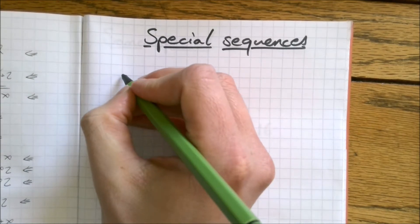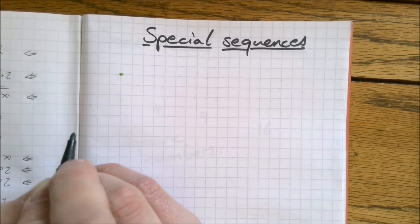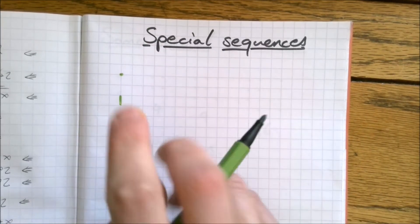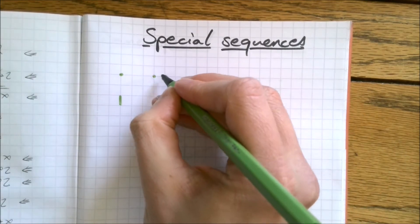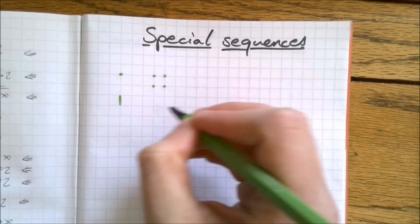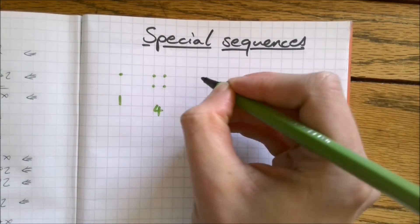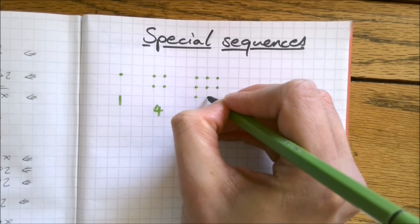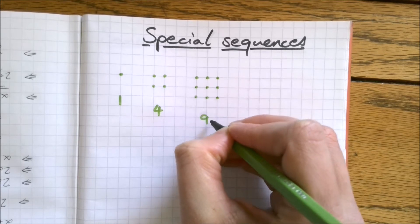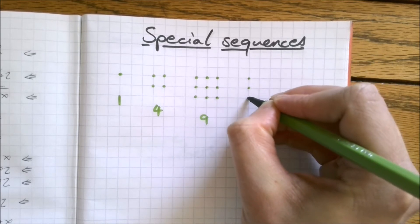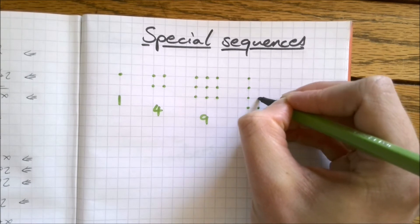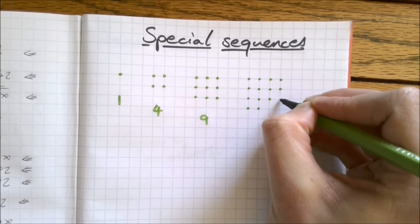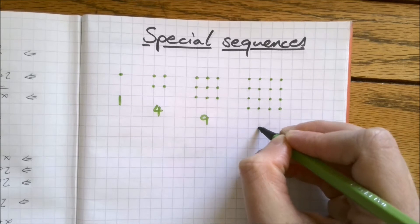The first one I hope will be quite familiar to you. I'm going to draw at the same time. So the first number is one, one dot. The second number is four. The third number is nine and you should see where this is going now. The fourth number if I carry on this pattern is 16.